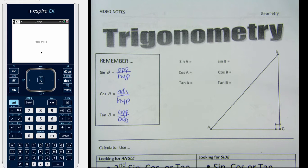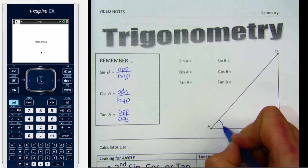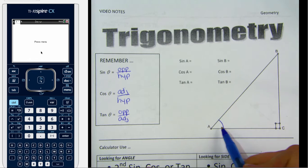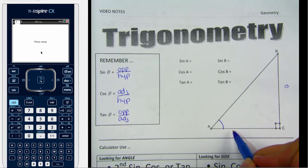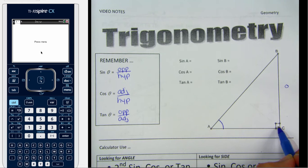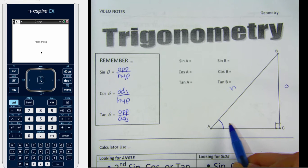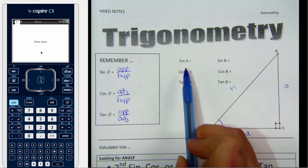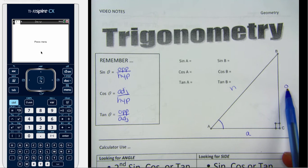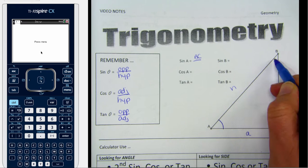Just a quick review. If I'm looking at angle A as my reference angle, from angle A the side BC is the opposite side. The side across from the right angle is always going to be the hypotenuse, and the side left over is the adjacent side. So the sine of angle A would be opposite over hypotenuse — the opposite side is BC and the hypotenuse is AB.